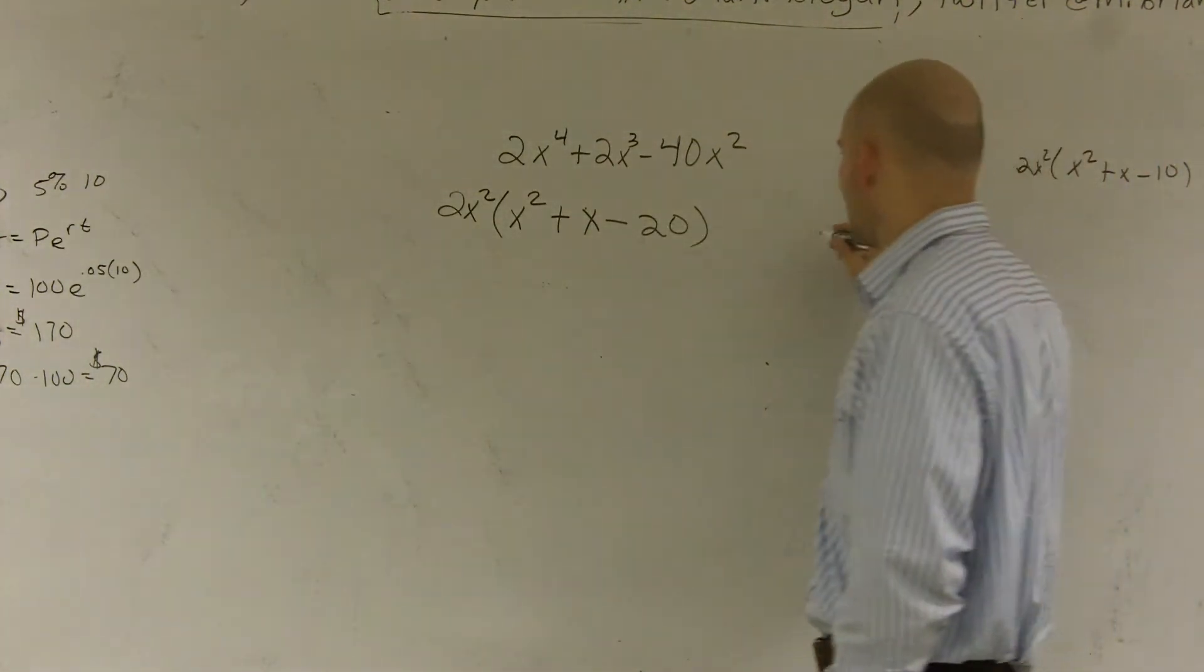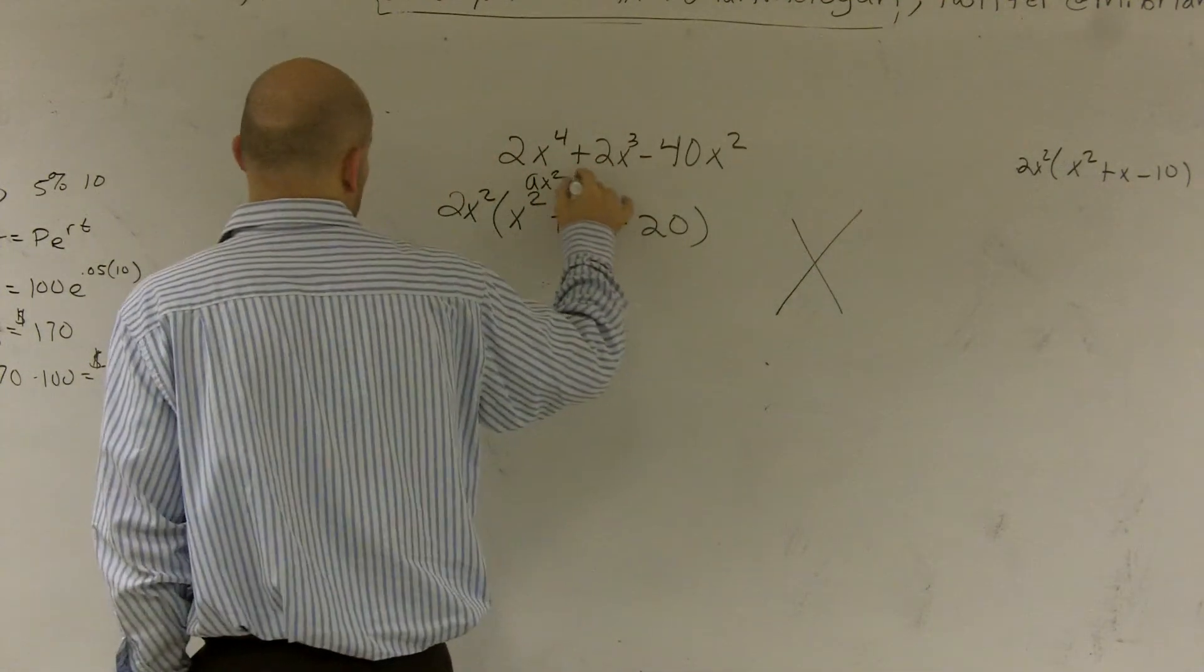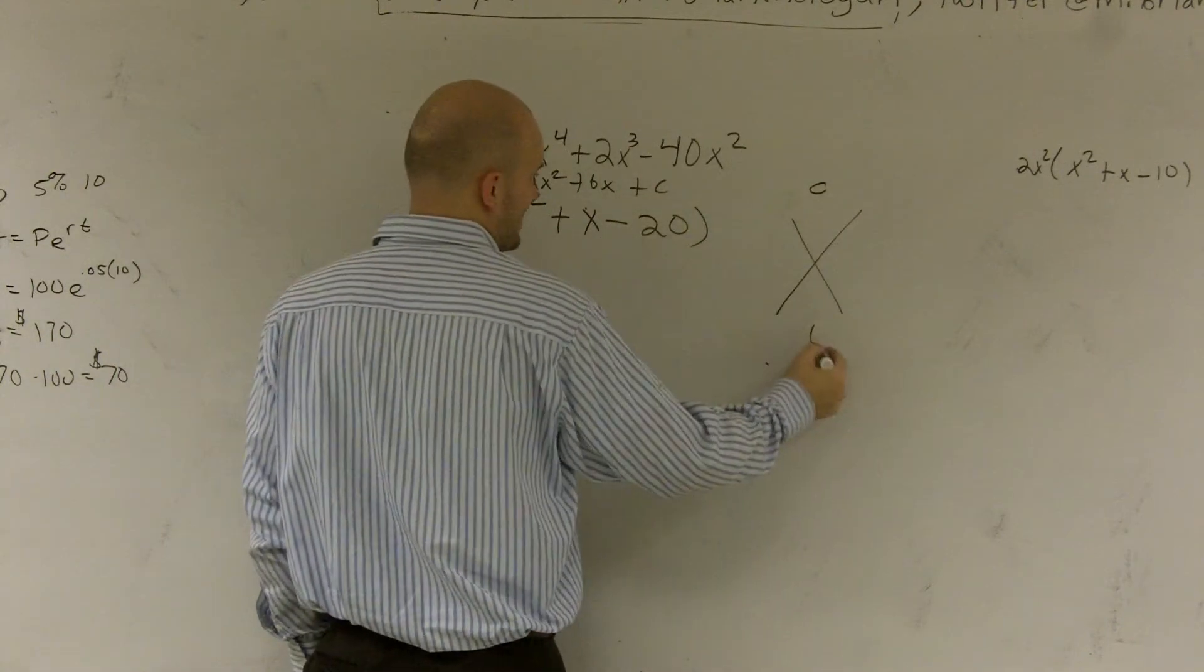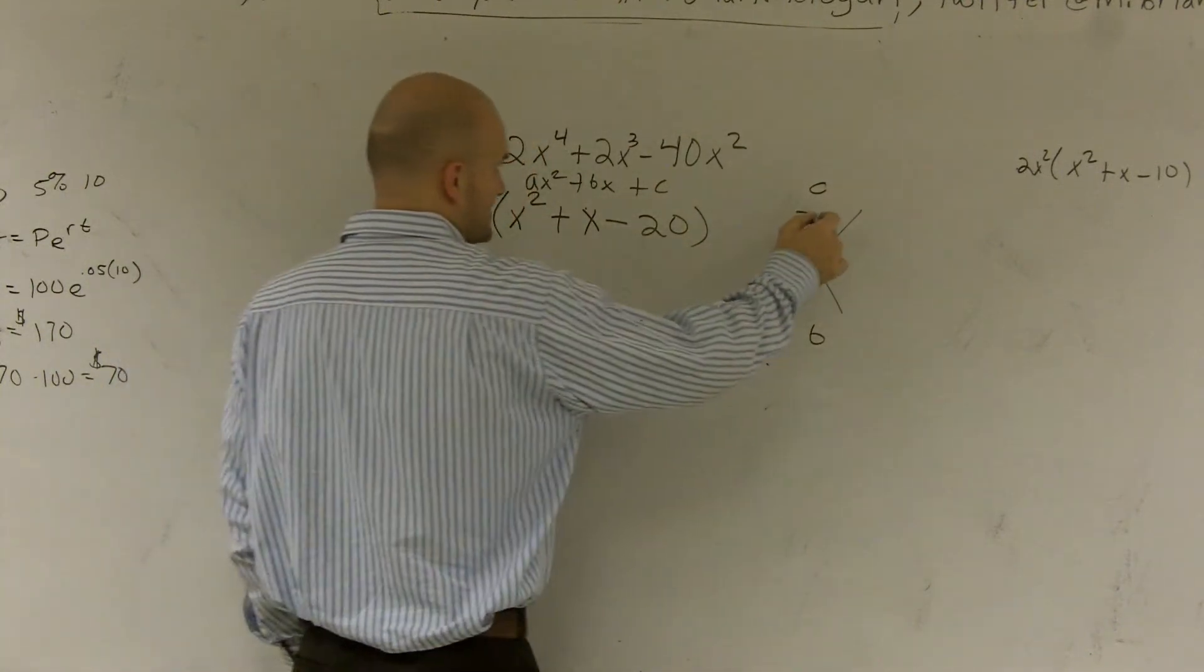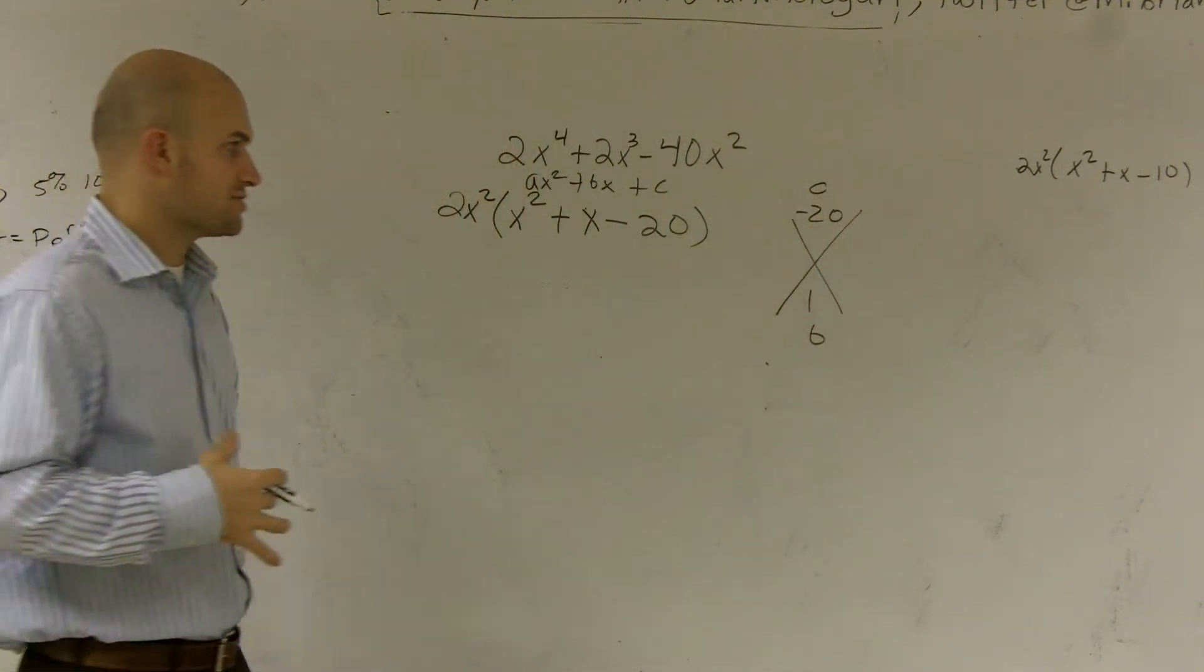To factor a trinomial, remember, we look at our c, which is ax squared plus bx plus c. We look at our c and our b. My c is negative 20 and my b is 1. That means the coefficient of each of those terms.